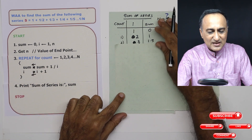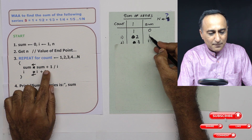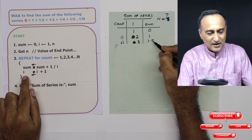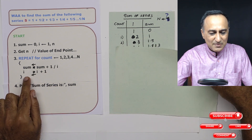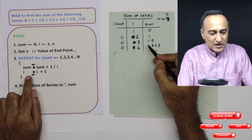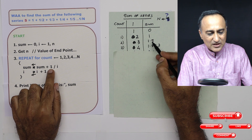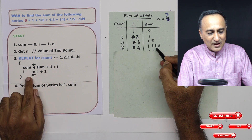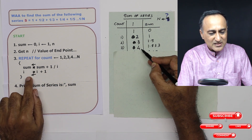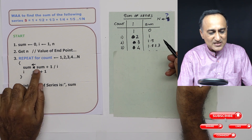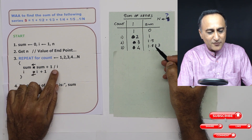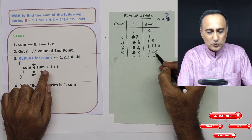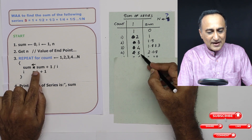Then sum is 1 plus 1 upon 2; 1 upon 2 is 0.5, so sum becomes 1.5 and i becomes 3. After i becomes 3, sum is 1.5 plus 1 upon 3, which is 0.33, so sum becomes 1.833 and i becomes 4. Next time, sum is sum plus 1 upon 4; 1 upon 4 is 0.25, so 1.833 plus 0.25 is 2.08. Then i ends up becoming 5.